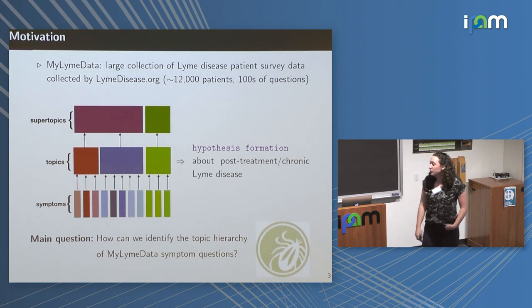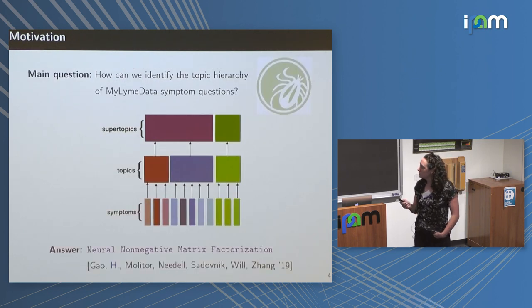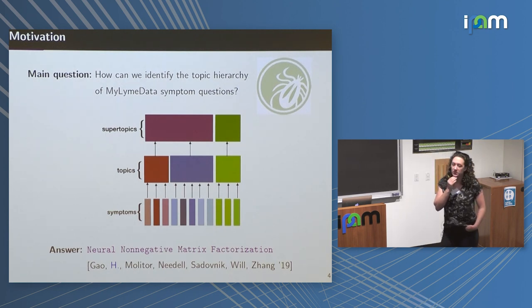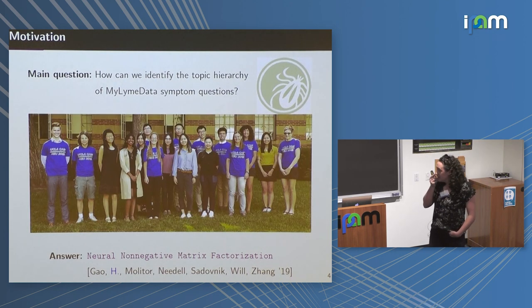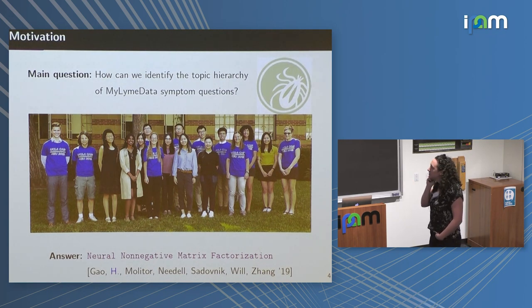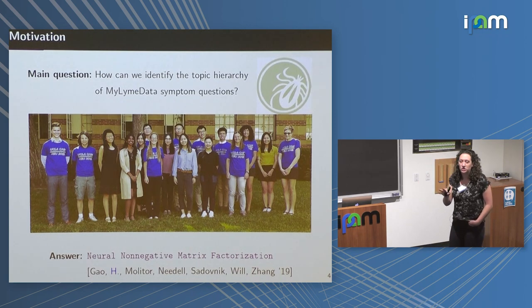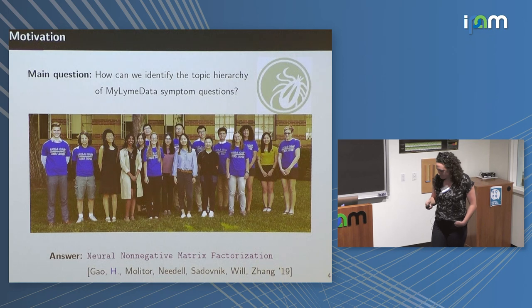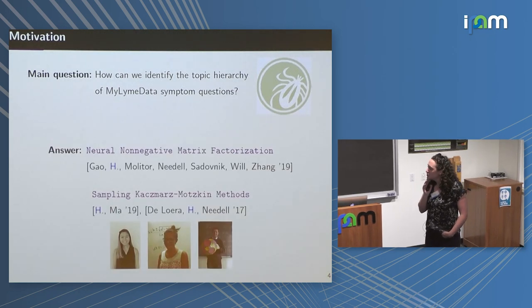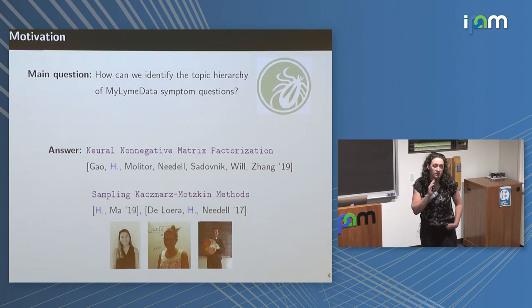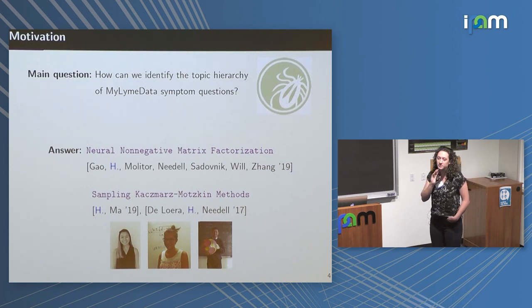The main question is how can we identify the topic hierarchy within this specific symptom dataset? The answer I'm going to pose is a new method known as neural non-negative matrix factorization, which began with one of the UCLA CAM REUs — a group of 13 undergraduate students, five of which worked on this method. I'll also zoom in on a sub-problem within neural NMF and talk about a family of methods known as the Sampling Kaczmarz-Motzkin method, which it turns out are also related to computerized tomography. Along the way I'll focus mainly on recent work with my collaborator Anna Ma.